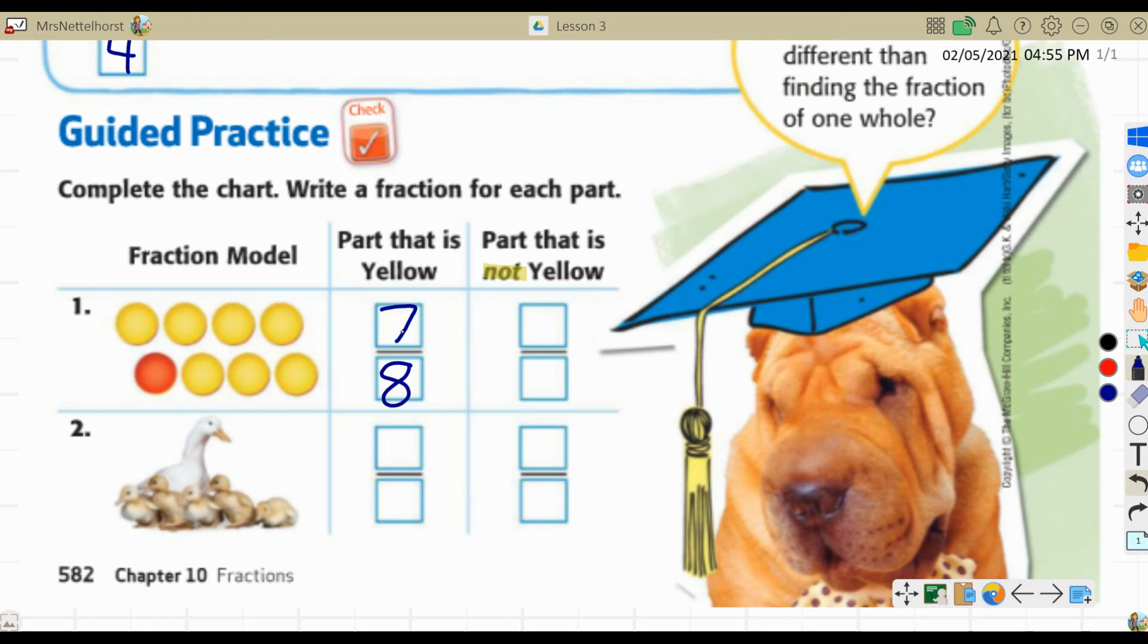Now you're going to put the part that is not yellow in the next box. Make sure that you do the total number of counters in the bottom box and the part that is not yellow in the top box. So we still have eight counters. That hasn't changed. And we have one that is not yellow. It is red and red is not yellow.